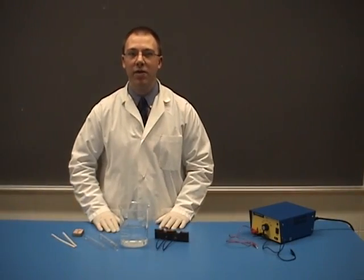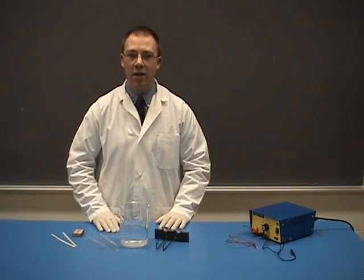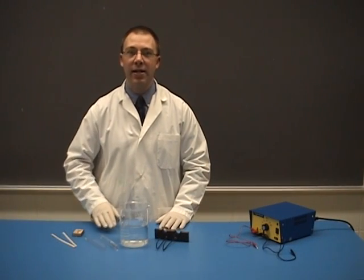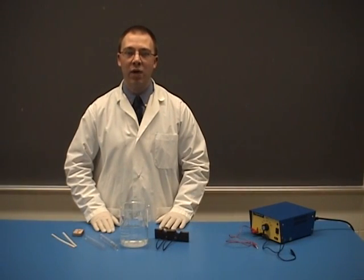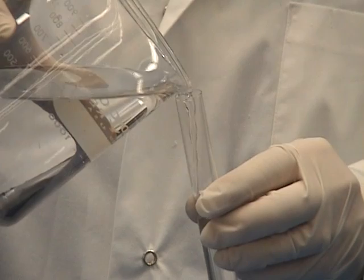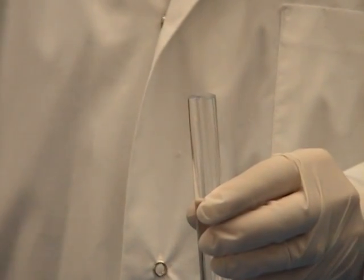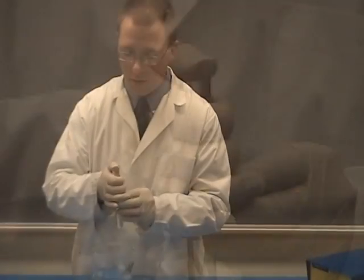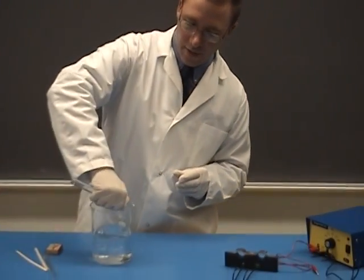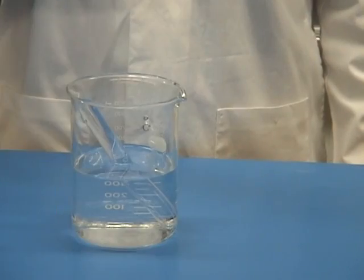Begin with about 600 milliliters of an aqueous solution. Aqueous means that water has been added to the acid, and in this case we have used H2SO4. This allows the electric current to circulate. Fill each test tube with the same solution. There should be no air in the test tubes. Place your thumb over the test tube and place it upside down in the solution.